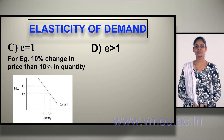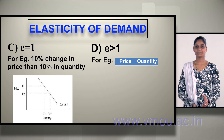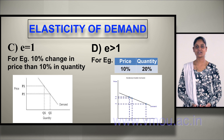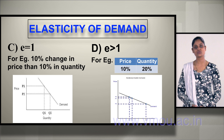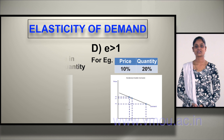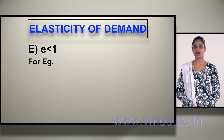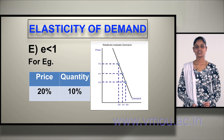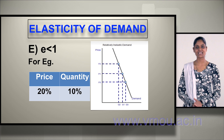E greater than one means the change in quantity demand is greater than the change in price. For example, your price is 5 and you consume 10 units; when price doubles to 10, your consumption also doubles to 20 units. E less than one means the change in quantity is less than the change in price — for example, price increases from 10 to 20, but quantity only increases from 5 to 8 or 10 units.